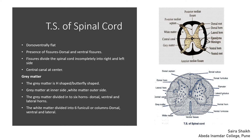At its centre, the spinal cord has a narrow cavity called the central canal, which is lined by ependymal cells present in a single layer. These cells are secretory in nature — they secrete cerebrospinal fluid (CSF), which provides nutrition and protection to the spinal cord. Around the central canal, a grey-colored tissue called grey matter is present.